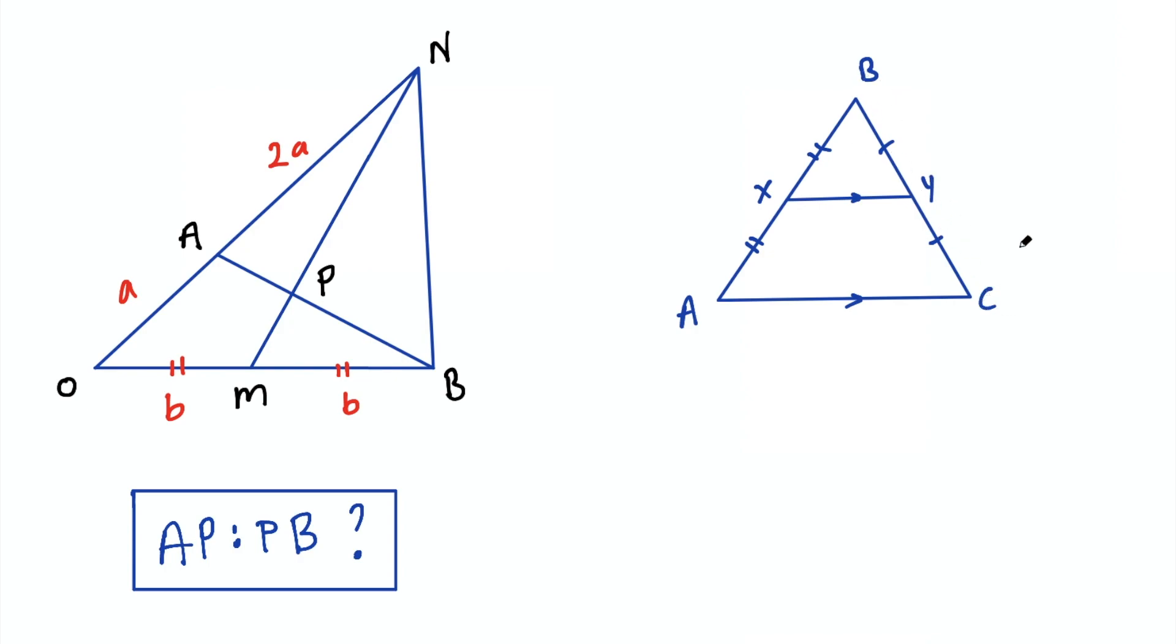So this is a fact that you can prove using vectors if you like or there's different ways to prove it, but basically if you have this line XY and it's parallel in this example to AC, whatever ratio it divides one side into will divide the other side in the same ratio.